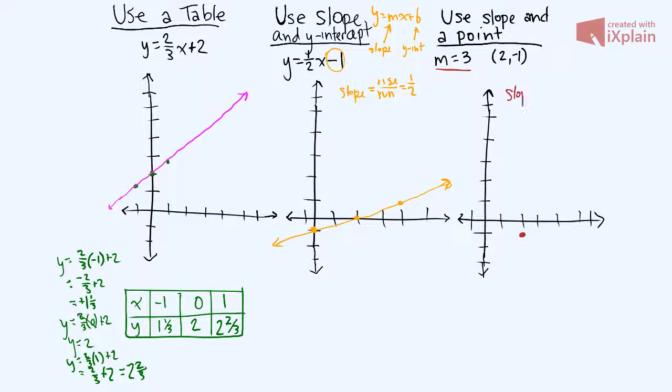So our slope, again, is rise over run. And in this case, it's 3. And if we write 3 as a fraction, it becomes 3 over 1. So we go up 3, 1, 2, 3 over 1. And then we can go up 3, 1, 2, 3 over 1 again if we want to.